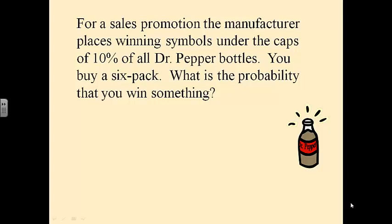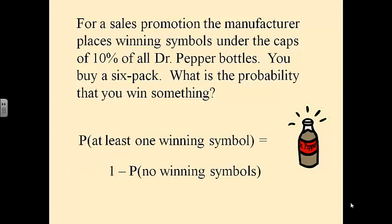For a sales promotion, the manufacturer places winning symbols under the caps of 10% of all Dr. Pepper bottles — Dr. Pepper is my absolute favorite soda. You buy a six-pack. What is the probability that you win something? The probability of winning is getting at least one winning symbol. That equals one minus the probability of no winning symbols. The only way you lose is if all six cans are losers. So it's 1 minus the probability that all six are losers: 0.9 raised to the sixth power. That's how you calculate at least one — told you it'd save you some time.